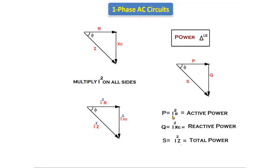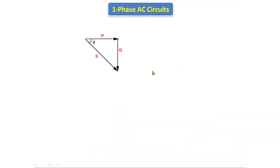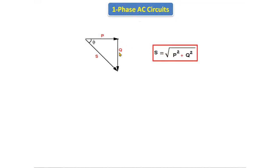In the power triangle, I²R is replaced with P (active power), I²·Xc is replaced by Q (reactive power), and I²·Z is replaced by S (total power). P is the active power with formula I²R. Q is the reactive power with formula I²·Xc. S is the total power equal to I²·Z. Applying Pythagoras theorem to this triangle, we get S equals the square root of P squared plus Q squared. This is the RC series circuit power triangle.